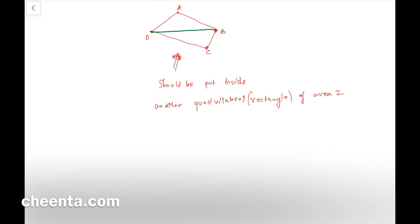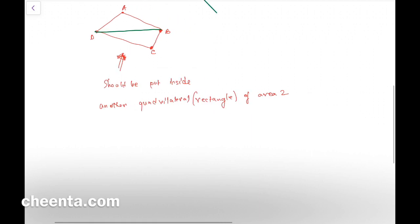So once you join BD, this is step one: join BD or AC. One of them will work by convexity.